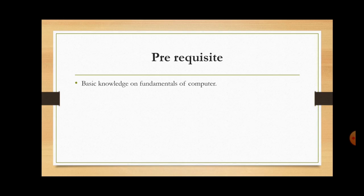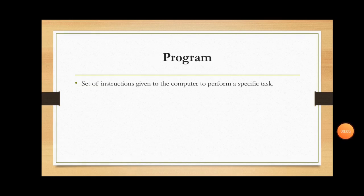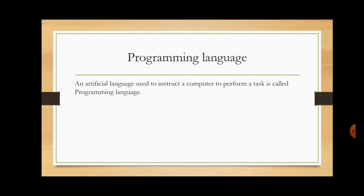If we want the computer to do certain tasks, we must give proper instructions to perform the task. We normally do this by writing a computer program. A program is a set of instructions given to the computer to perform a specific task. To write a computer program, we use a language called a programming language. A programming language is an artificial language used to instruct a computer to perform a task.